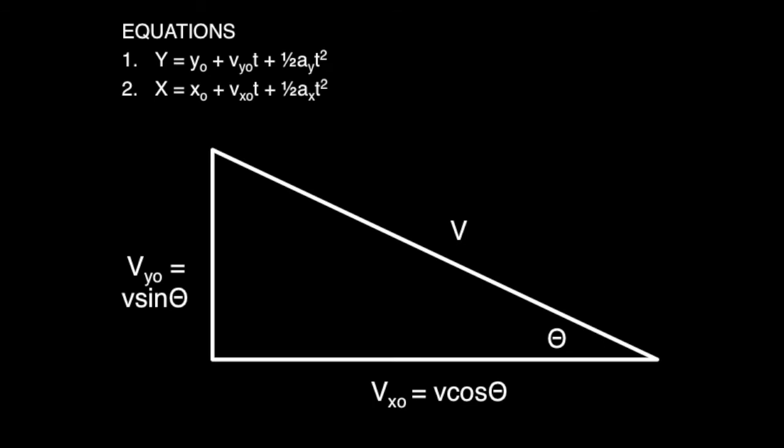By using the same triangle to find the initial velocity of the x direction, we used cosine. And to find the initial velocity of the y direction, we used sine.